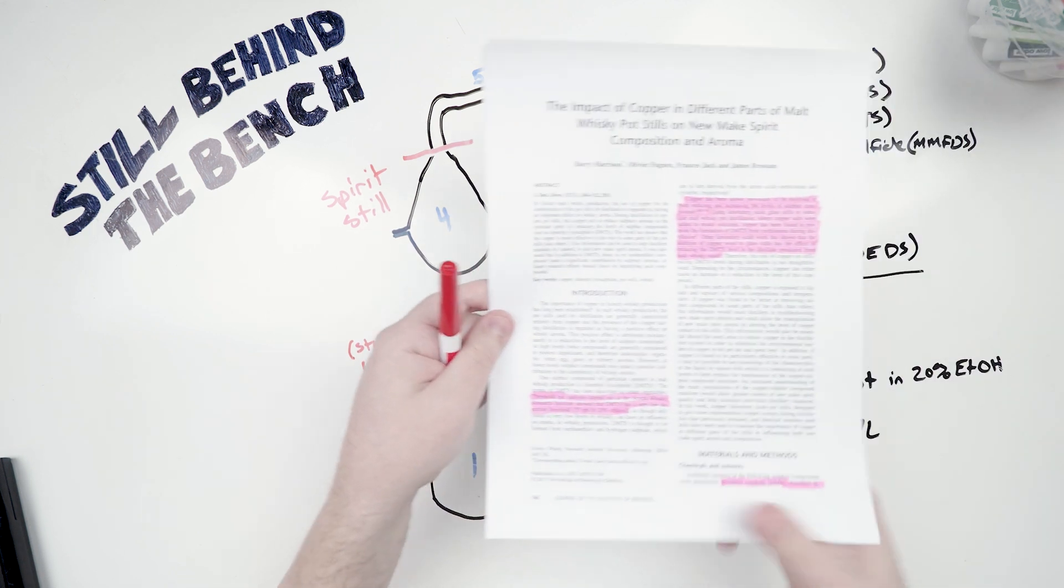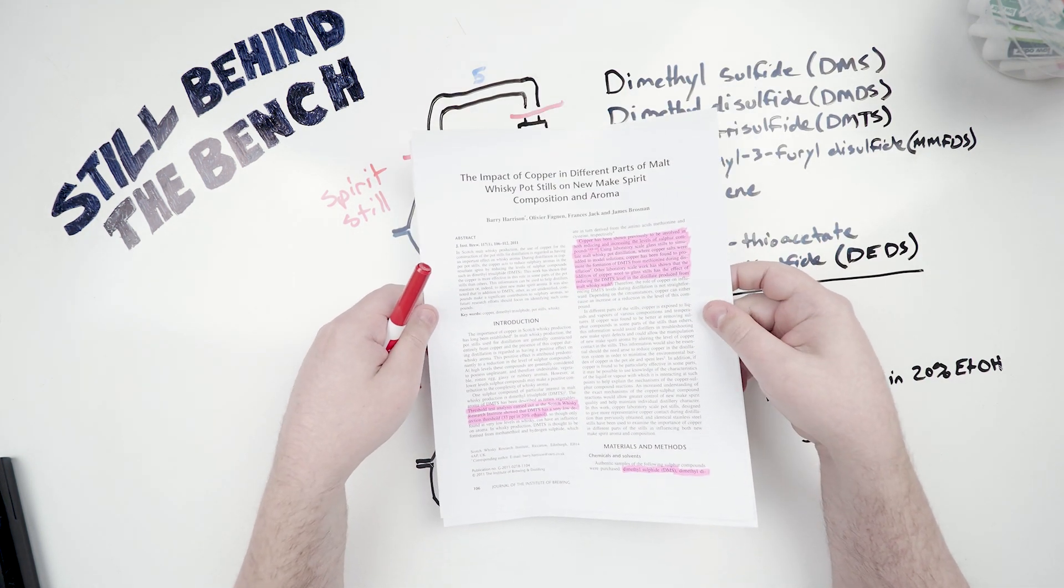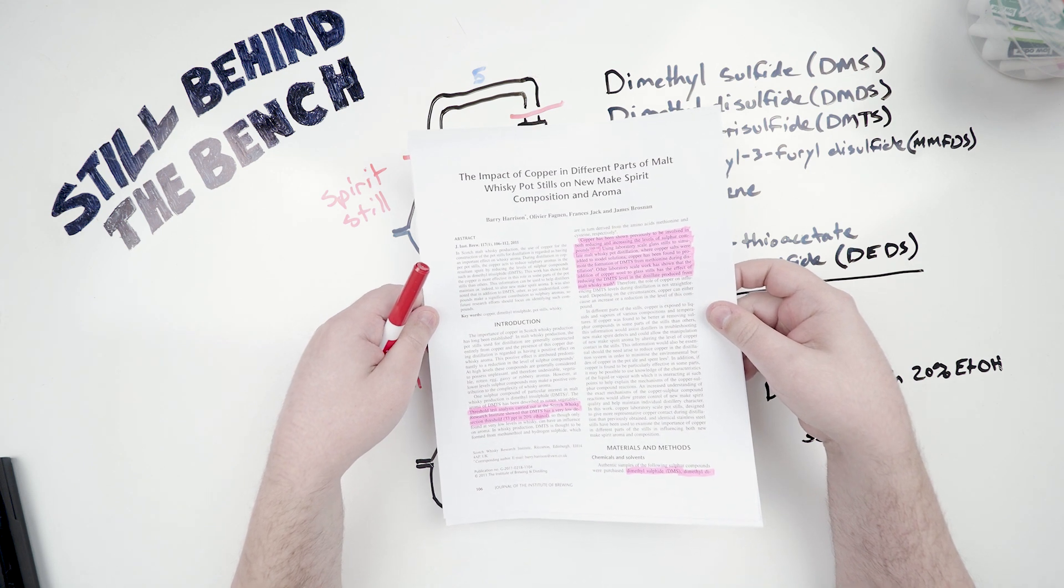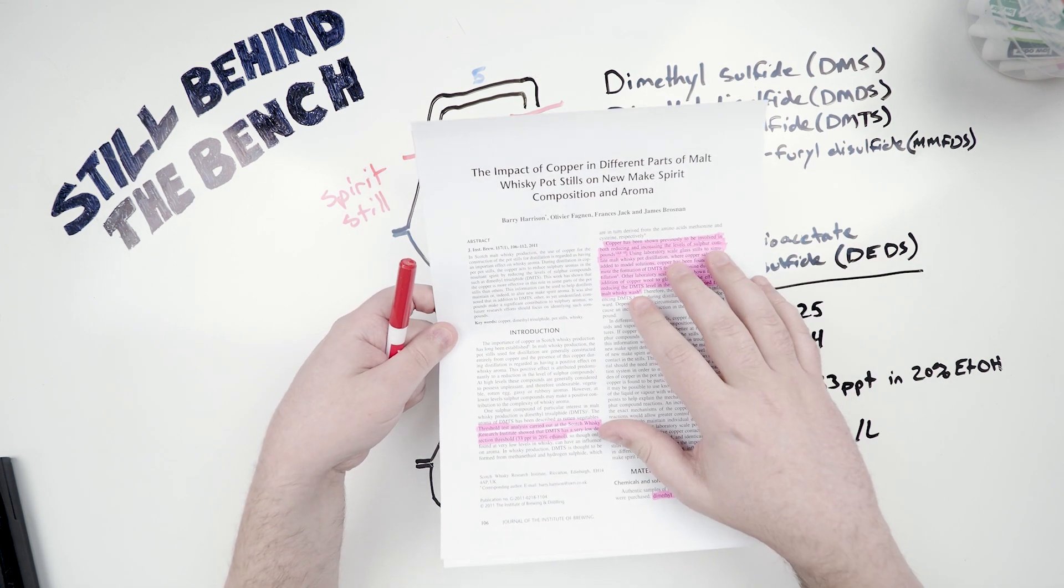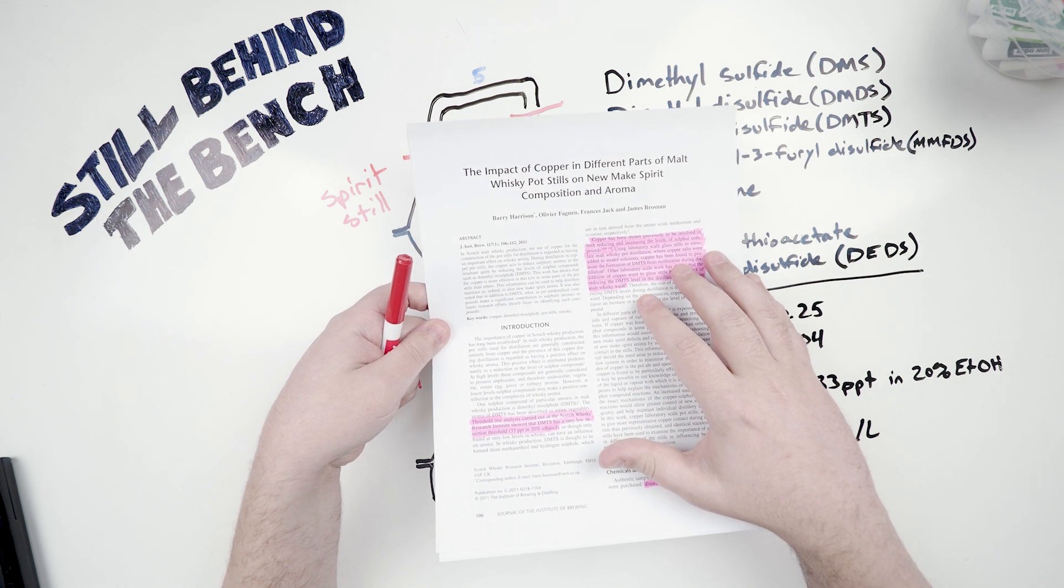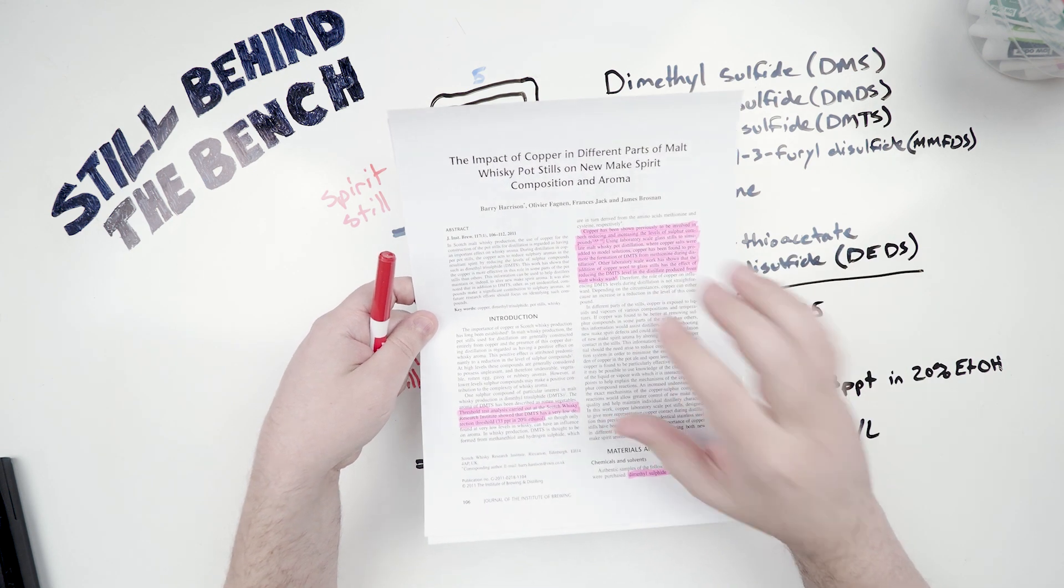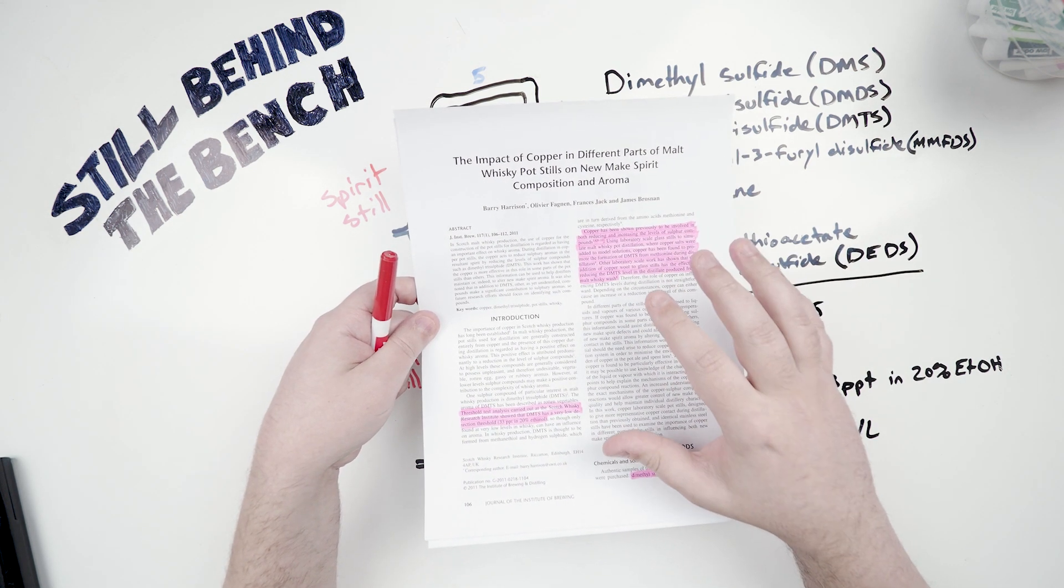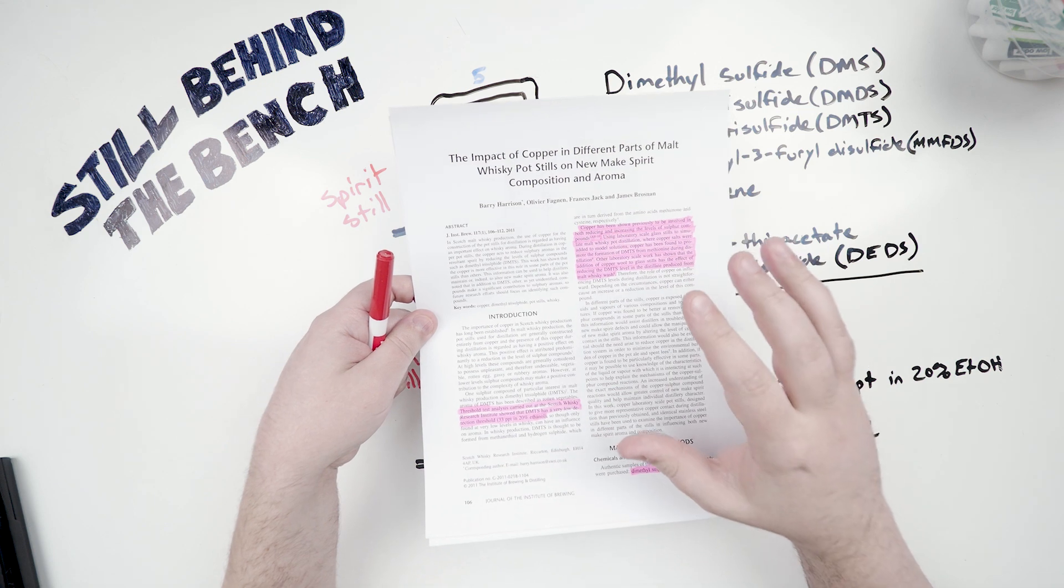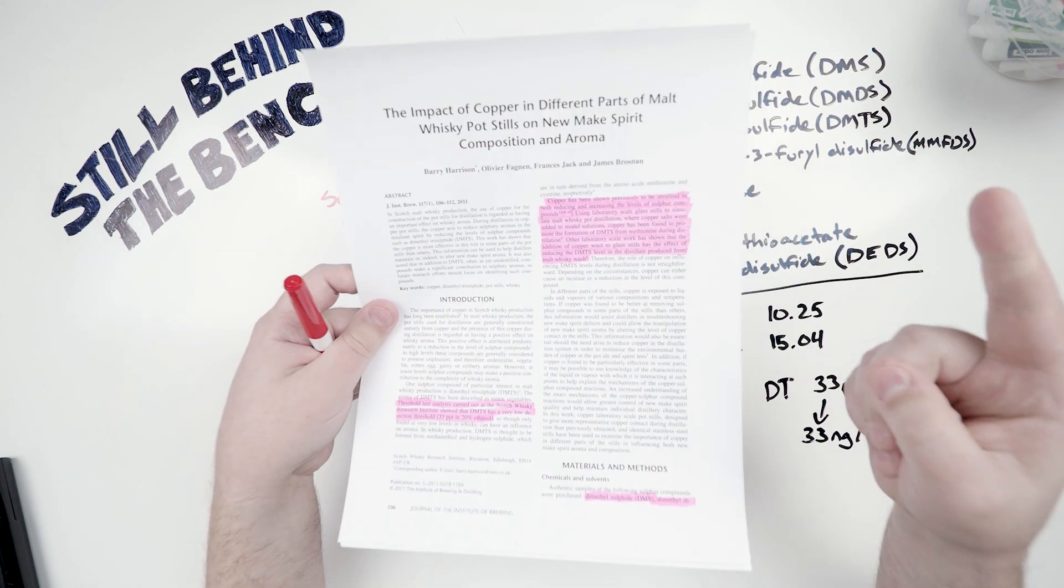This video is going to be focused on a study done in 2011 by researchers at the Scotch Whiskey Research Institute in Edinburgh, Scotland. The name of the study is The Impact of Copper in Different Parts of Malt Whiskey Pot Stills on New Make Spirit Composition and Aroma. Essentially it's all about how does copper affect the sulfur compounds in your distillate. I'll put a link in the description of this study. Let's get started.